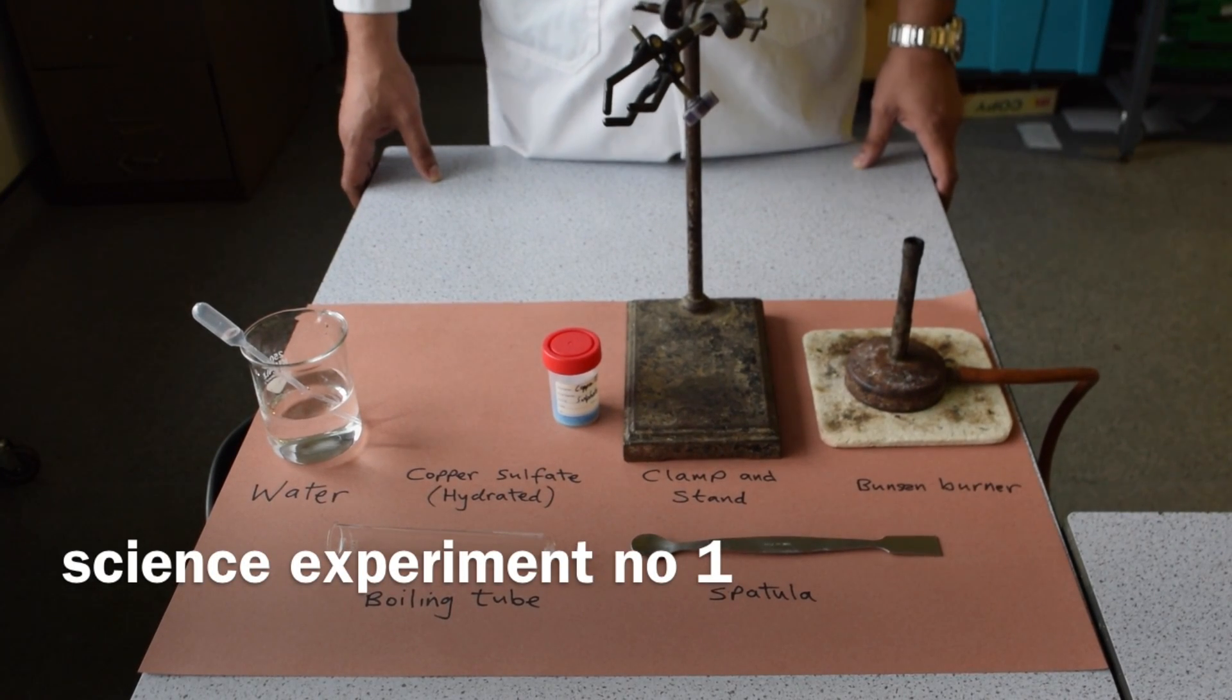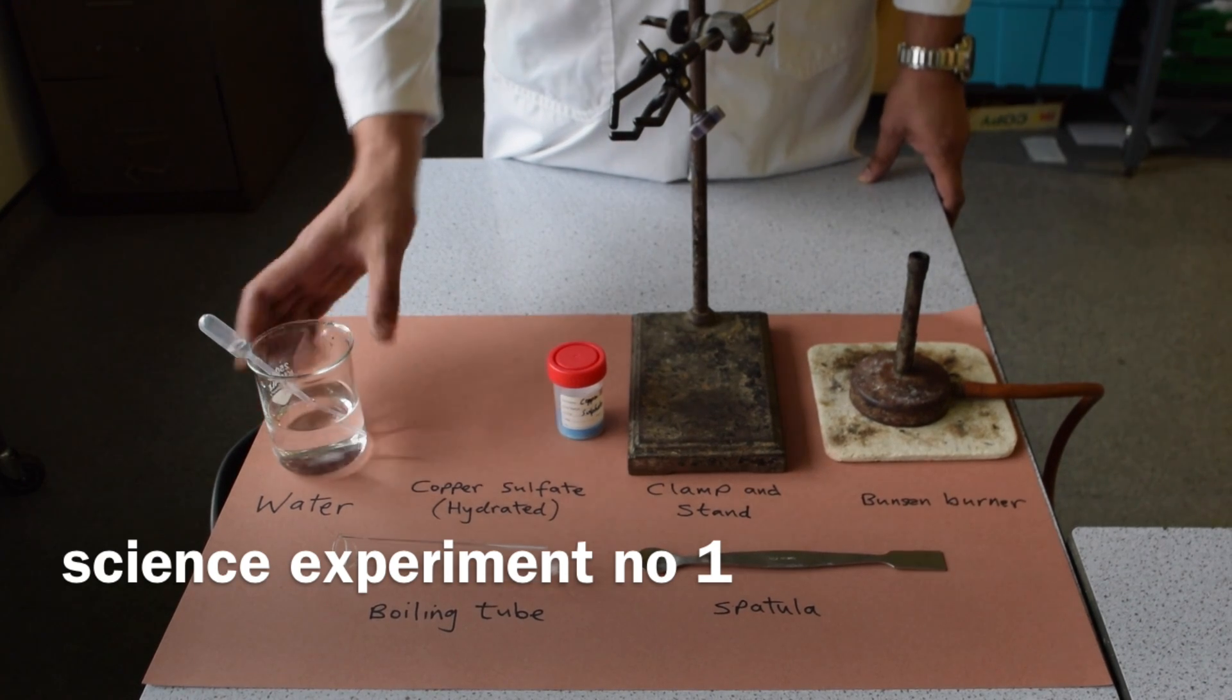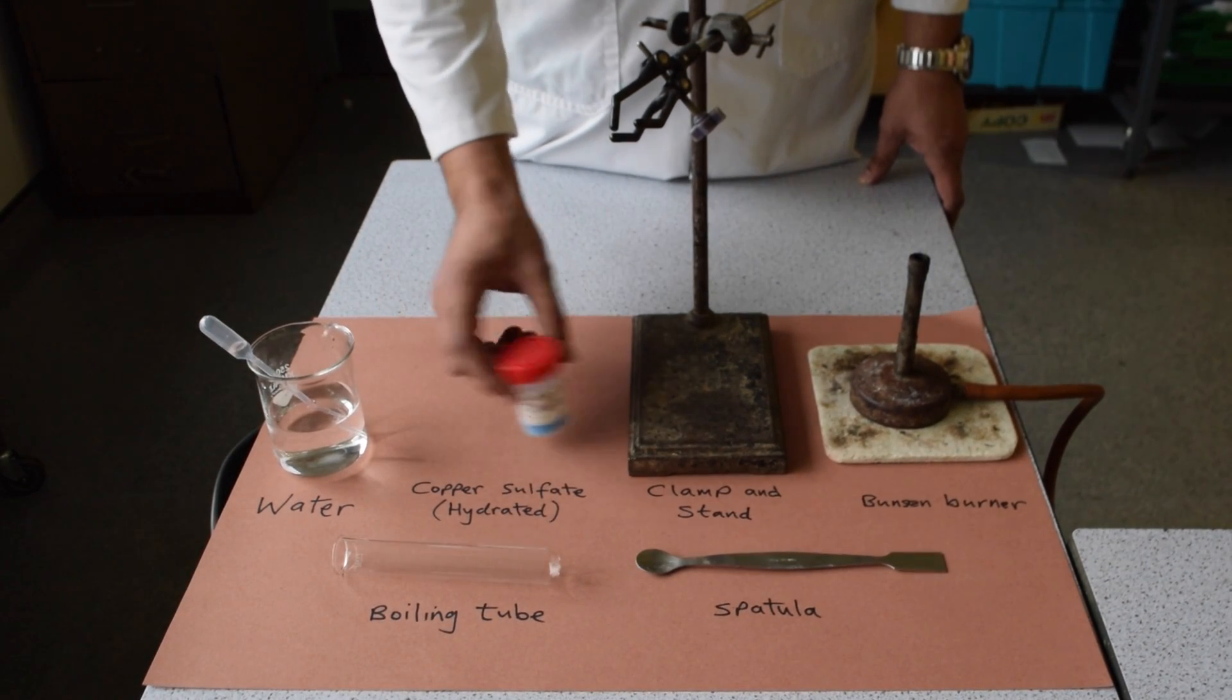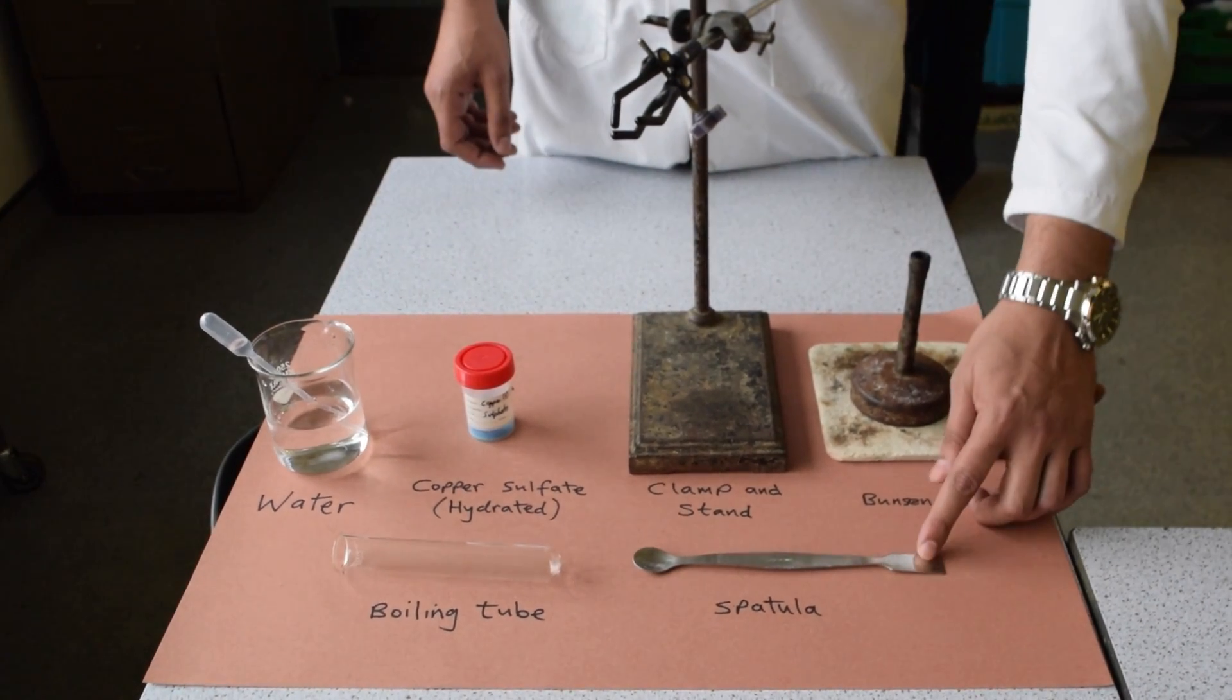The equipment we need to carry out this reversible reaction includes water, a boiling tube, blue copper sulfate, clamp stand, Bunsen burner, and spatula.